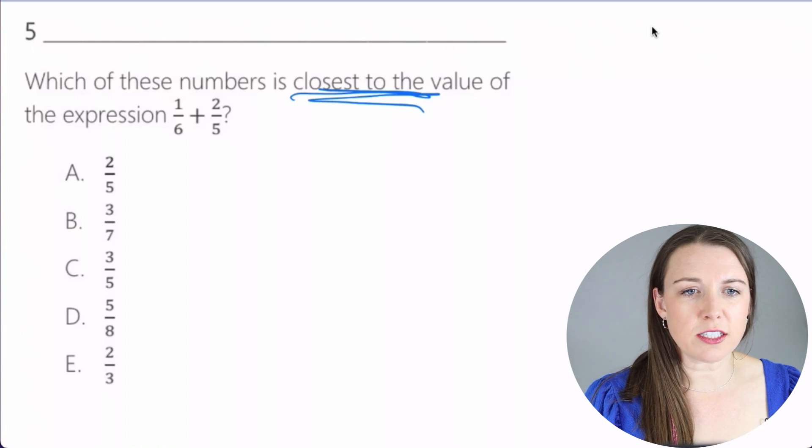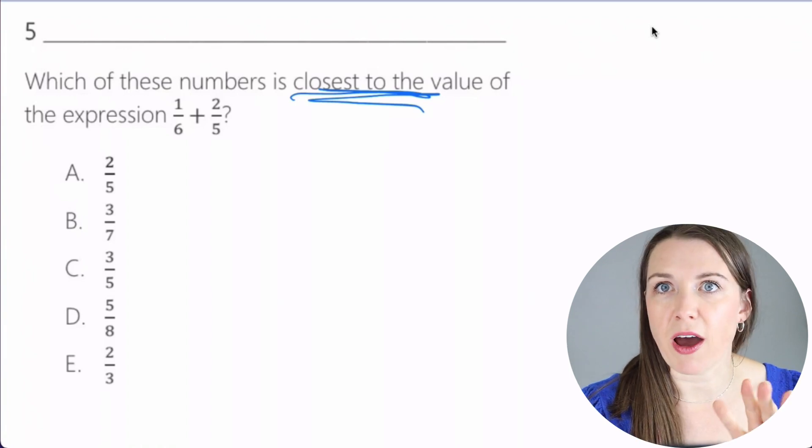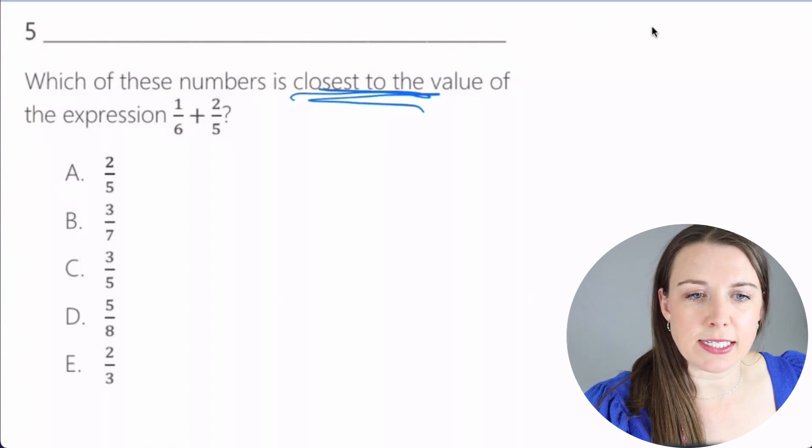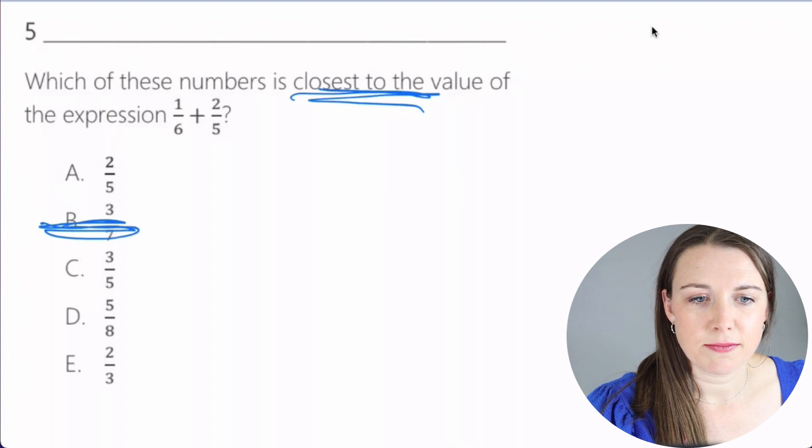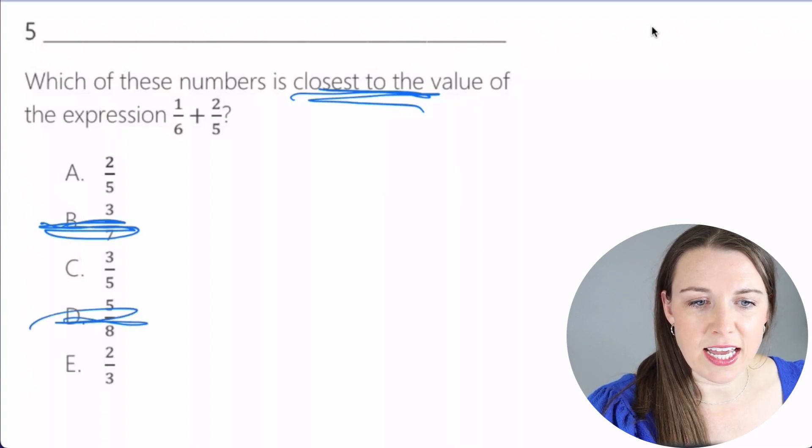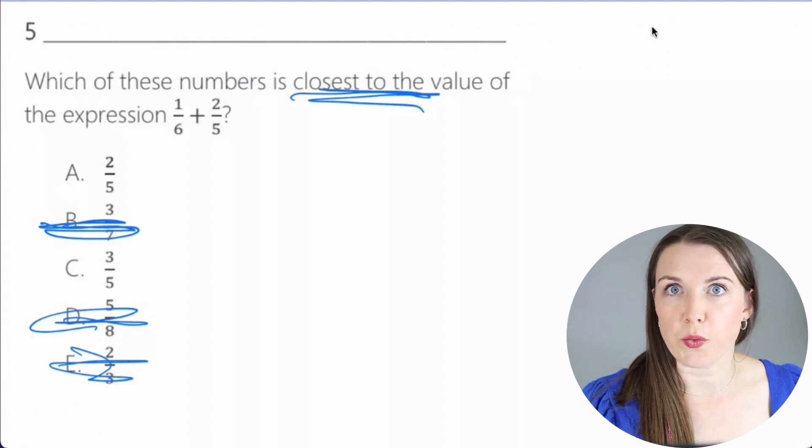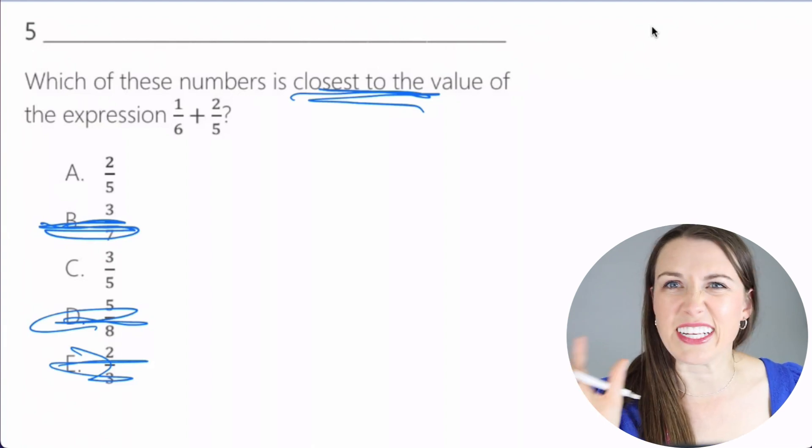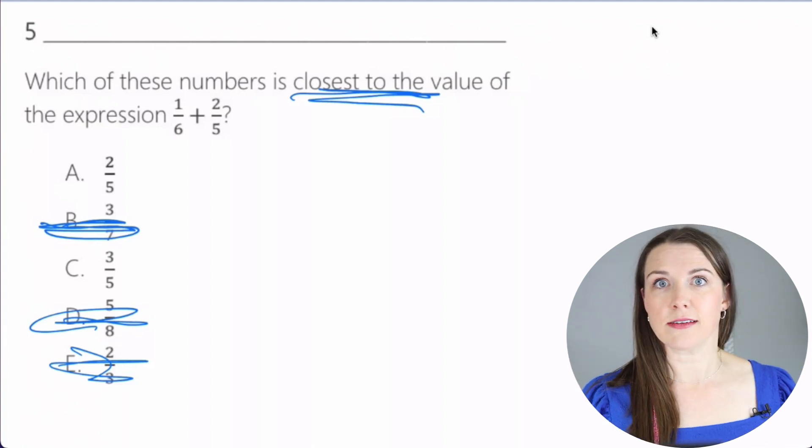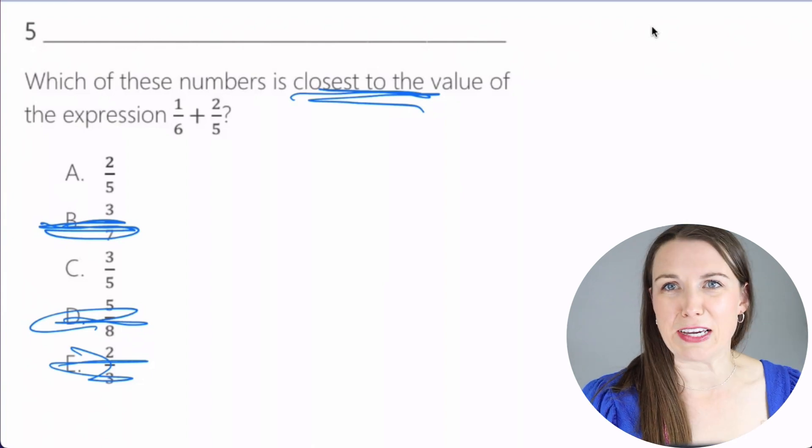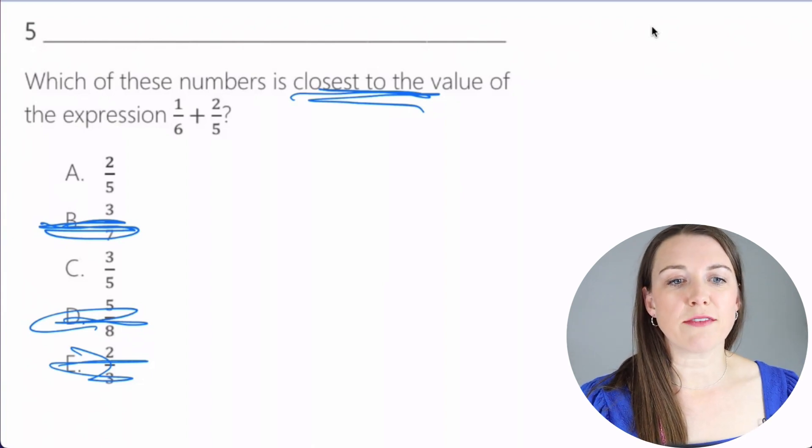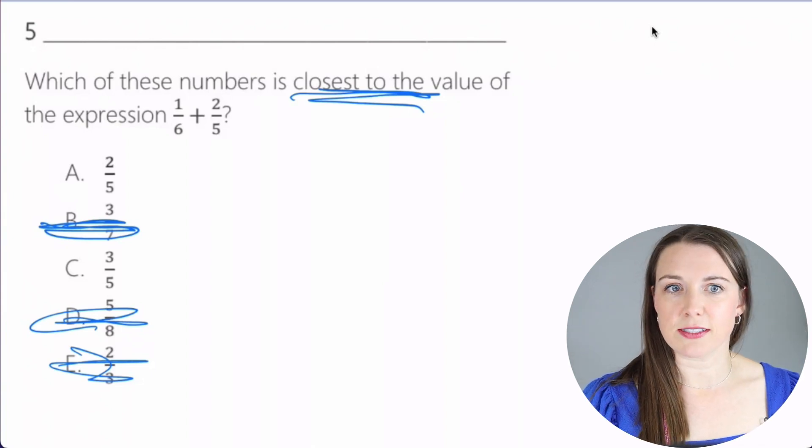Okay. All right. So notice here, A has a 5 on the bottom. We'll stick with that one. B has a 7. Let's get rid of that one. D has an 8 and then E has the 3. So now we're left with just 2. And if you can do that, eliminate some of the answers and then just guess, that's actually a really good technique.